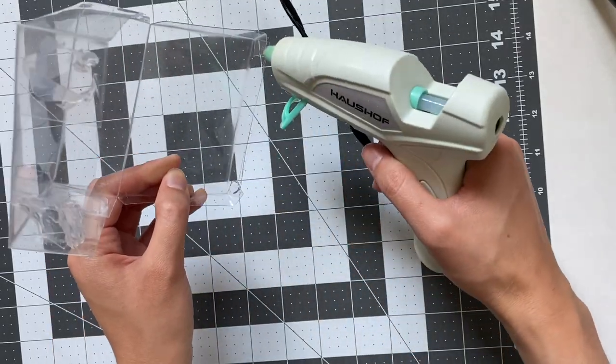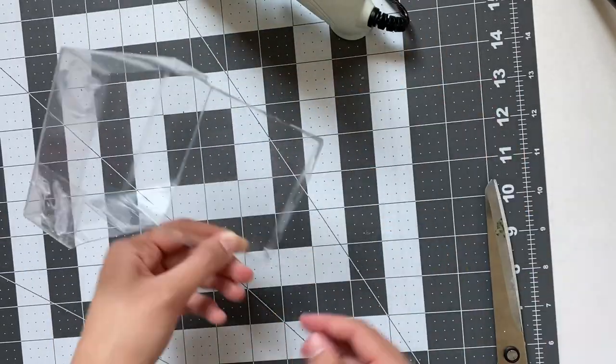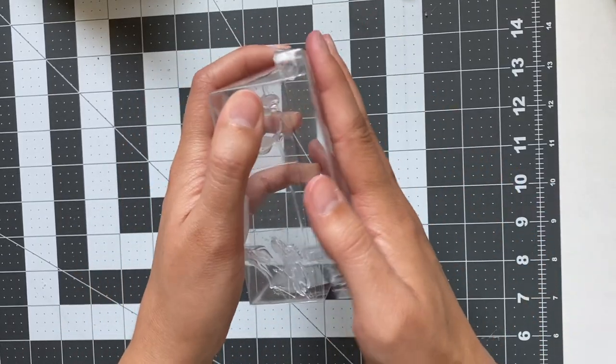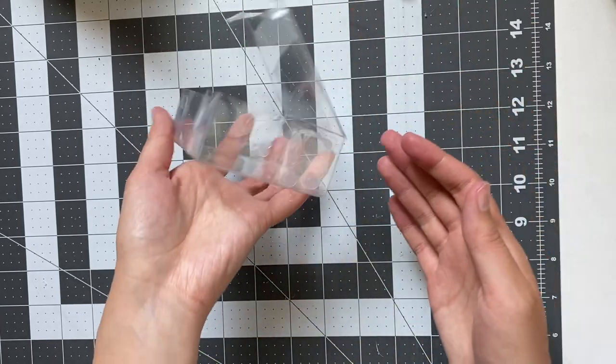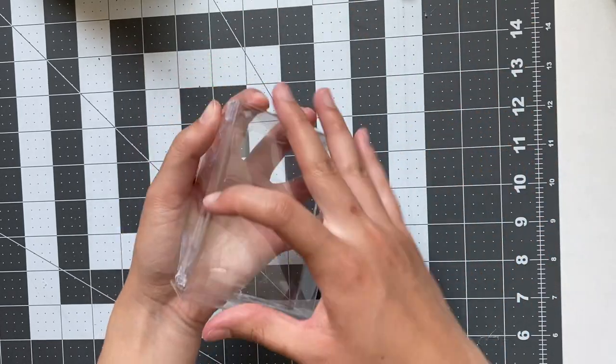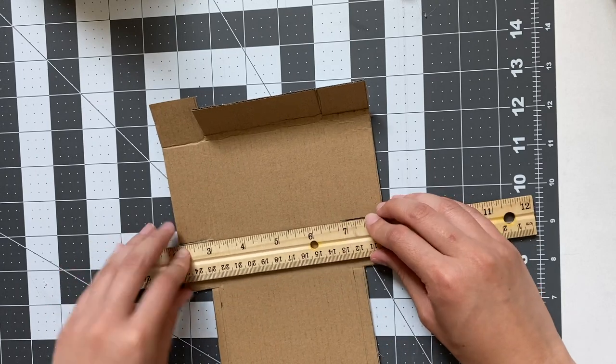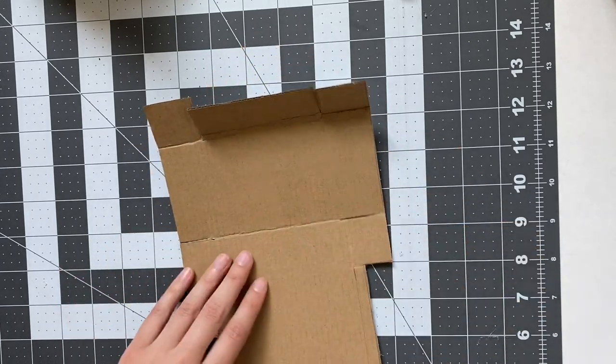I then repeated the same thing for the lid and here is what it looked like in the end. I know it looks like a perfectly good box but when I tried to close the lid it just would not fit at all. It's just the shape that was off. So I had to remake this using cardboard after adjusting my pattern.